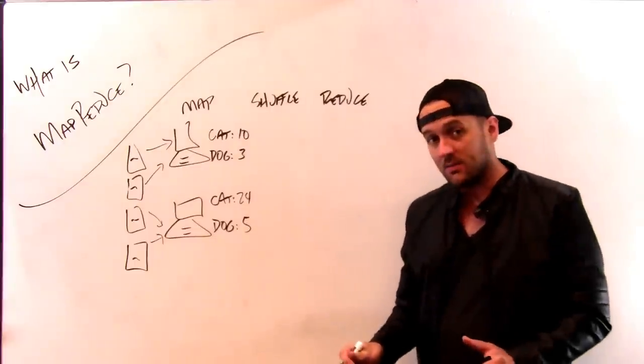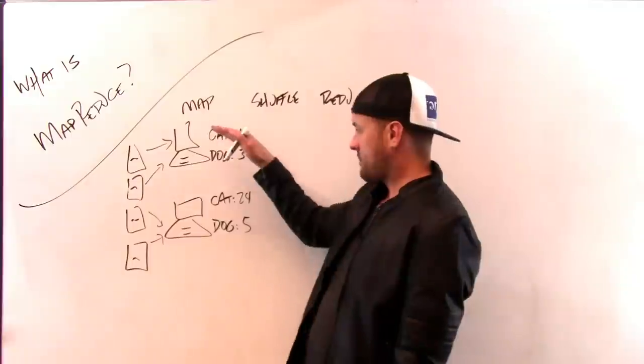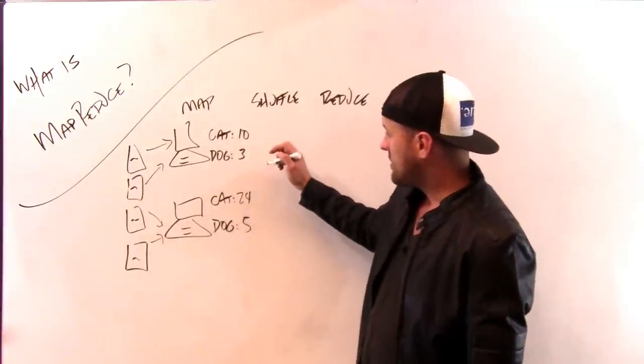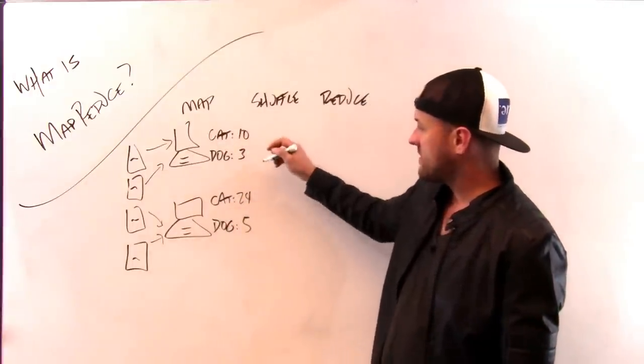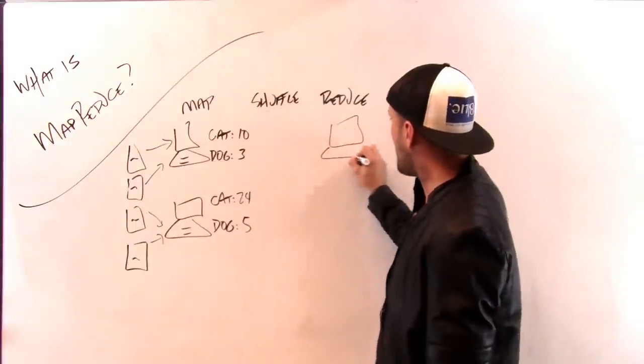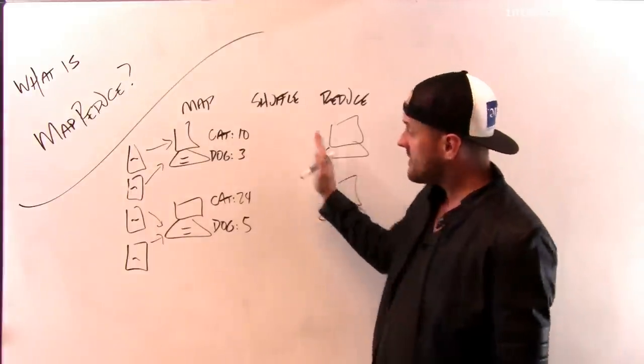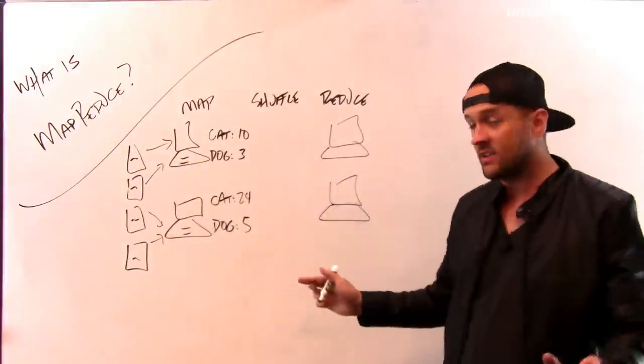If I have a million documents and a hundred thousand computers, each computer processes ten documents. So I process my documents, and now what I do is in the shuffle and the sort stage, I take these keys and I have two more machines that I'm going to use in the reduce stage. These could be the same machines or different machines, it doesn't matter.